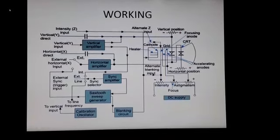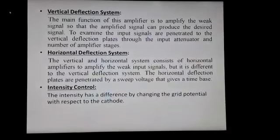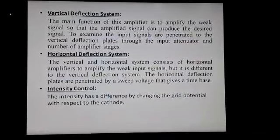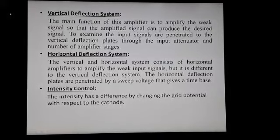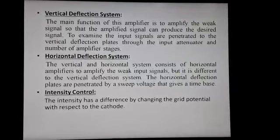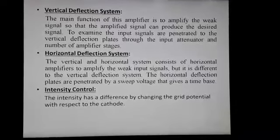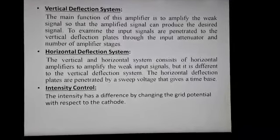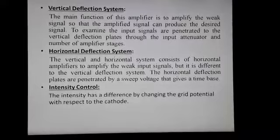This is the working of the CRO. The vertical deflection system's main function is to amplify the weak signal so that the amplified signal can produce the desired deflection. Input signals are fed to the vertical deflection plates through the input attenuator and a number of amplifier stages. The horizontal deflection system similarly consists of horizontal amplifiers to amplify weak input signals, but it differs from the vertical system in that the horizontal deflection plates are driven by a sweep voltage that gives a time base.